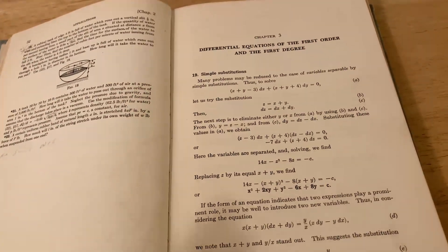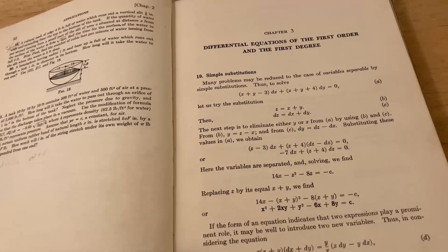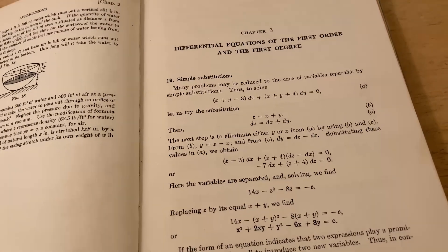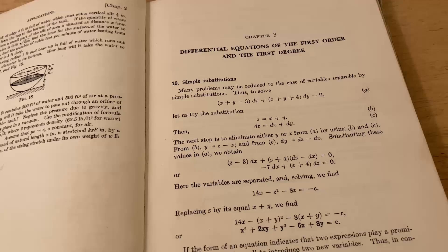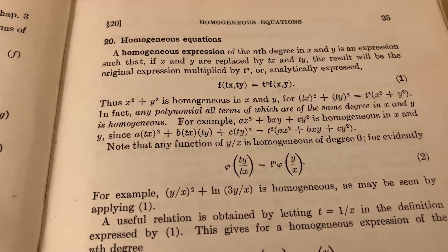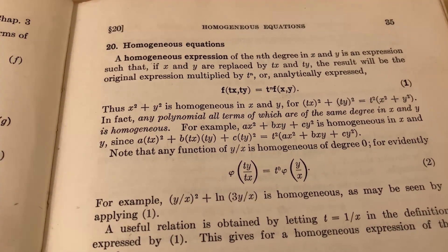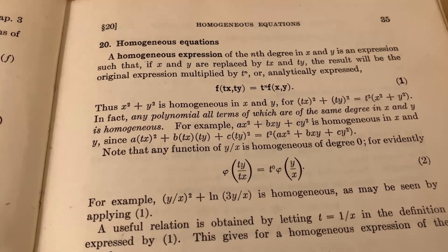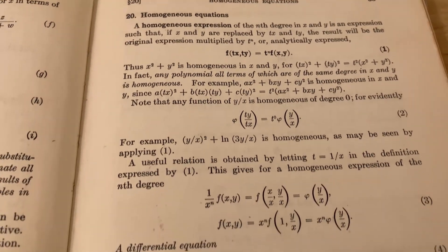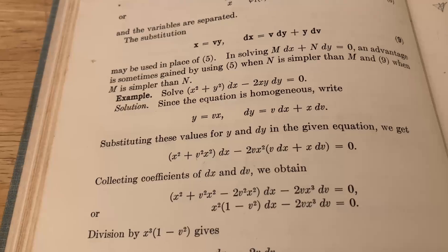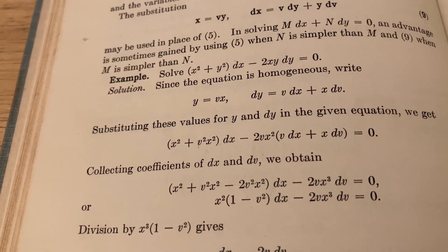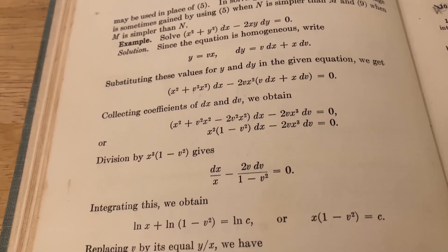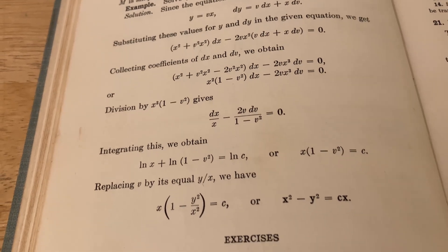Which leads me to number four, which is the readability and layout. This book is very concise and very well written. The sections are very short and to the point. For example, here is the section on homogeneous equations. He defines what he means by a homogeneous expression and then gives some simple examples. Immediately after that, he defines homogeneous equation, does an example where he shows you all of the work, and then it's the exercises right away.